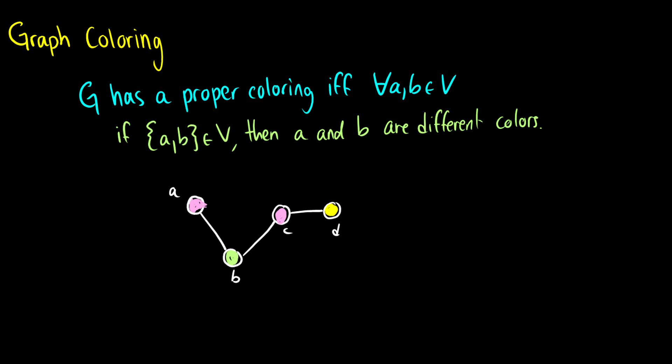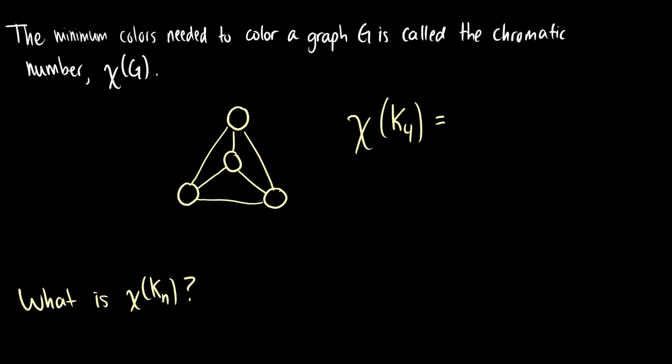We have a special term for that: the chromatic number, which is chi of G. Chi is written chi and pronounced 'ky'. We use this number to denote the minimum number of colors needed to properly color a graph.